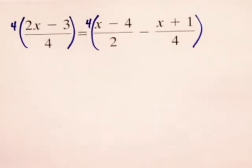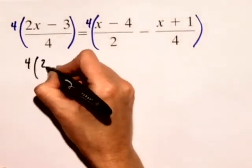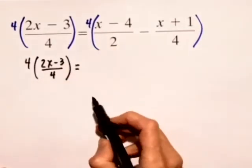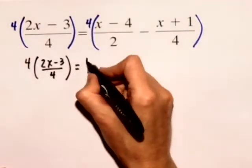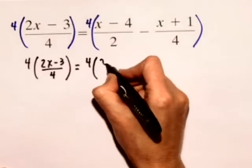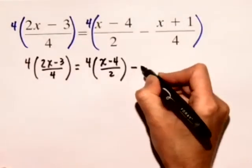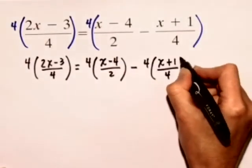So when we do that, we have 4 times the quantity 2x minus 3 over 4 is equal to, now we need to distribute the 4 through the right hand side, and we have 4 times the quantity x minus 4 over 2, minus 4 times the quantity x plus 1 over 4.